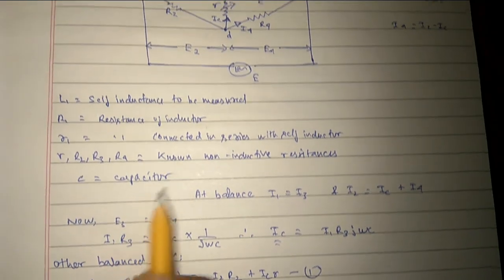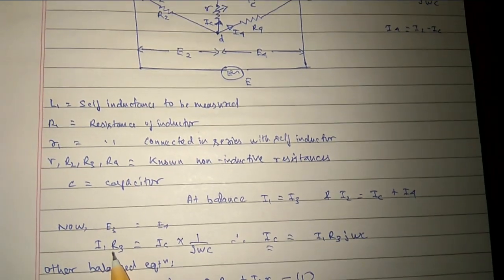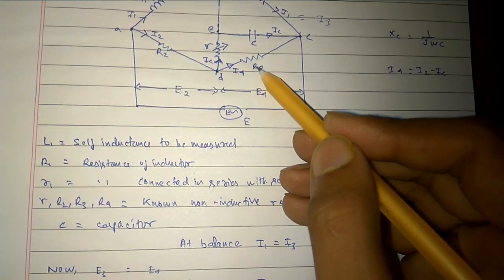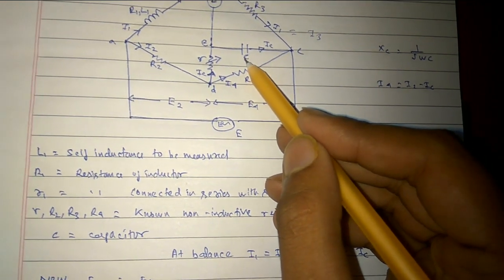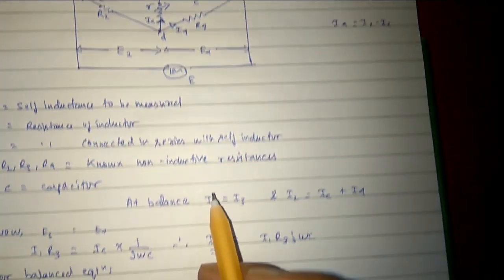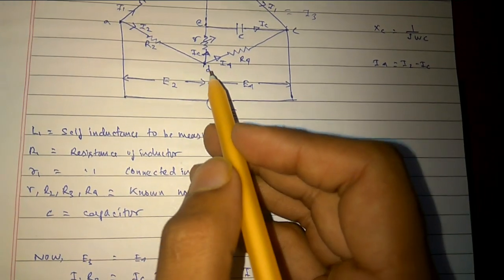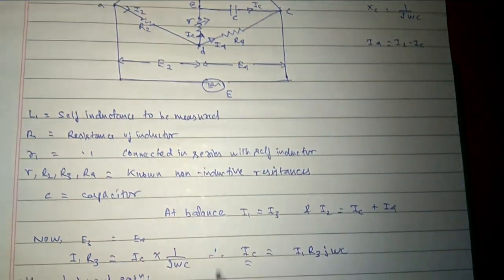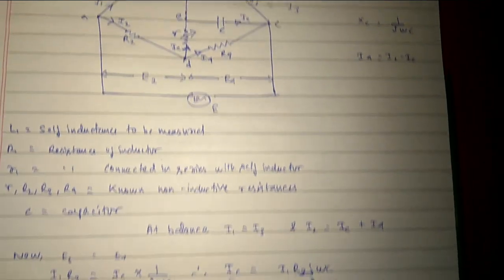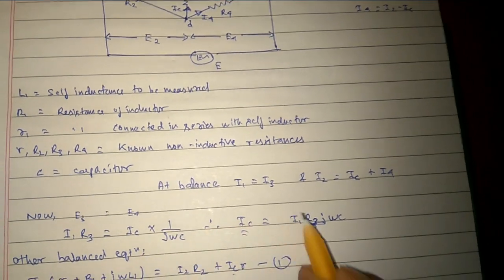First, E3 — as you can see, the resistance is R3 and the current is I1, so E3 equals I1 into R3. For E4, between these two points I4 is the current and R4 is the resistance, so E4 equals I4 into R4. We can also write it as Ic into Xc, where Xc equals 1 by j·omega·C. From this we get Ic into 1 by j·omega·C, so Ic equals I4·R4·j·omega·C. Substituting back, we get the value of Ic.